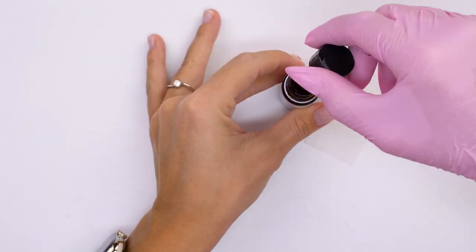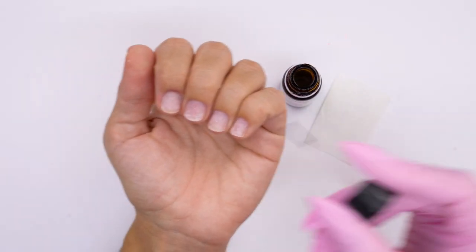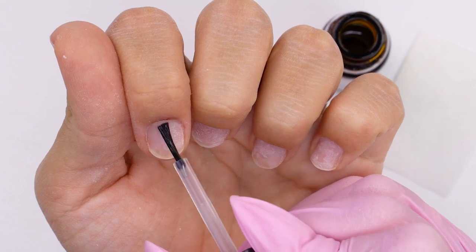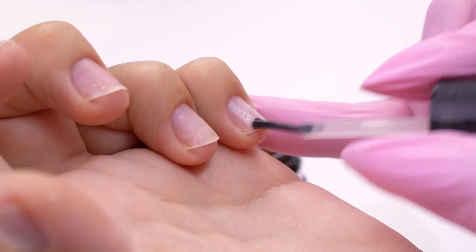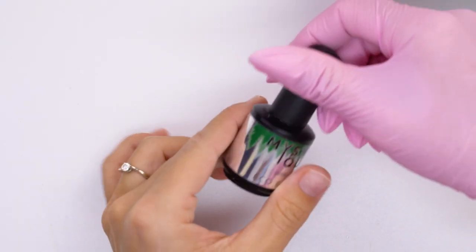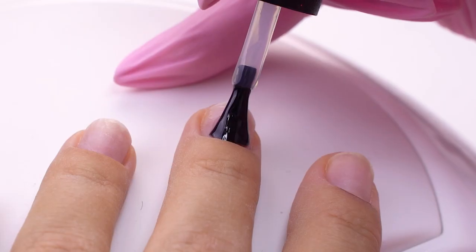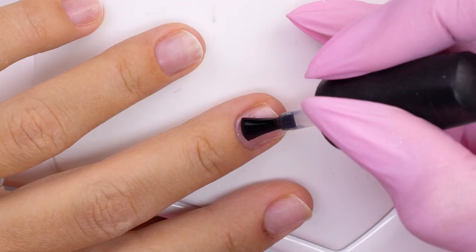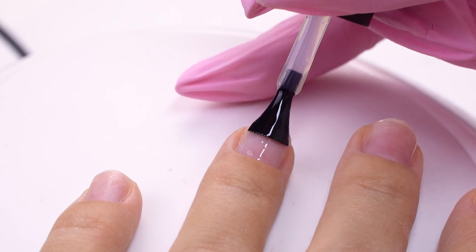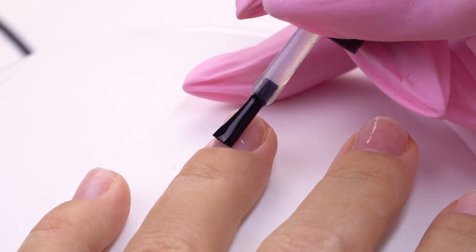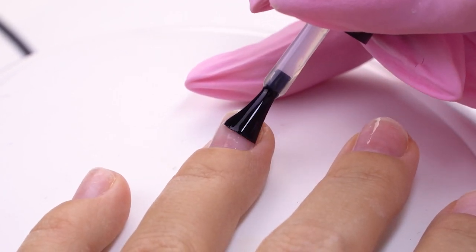I always apply a primer, but don't get on the skin this time. Moving on to the base coat. I apply a rubber one, since my nails are thin and flexible. I apply more near the cuticle. This way there will be a smooth transition and a lower chance of liftings.